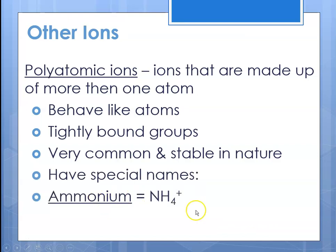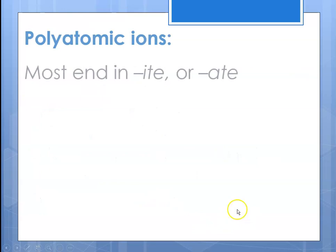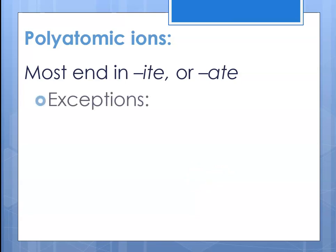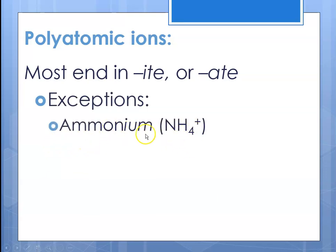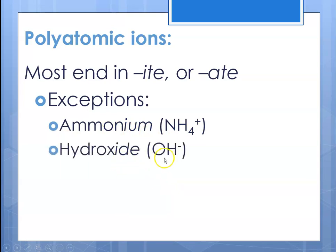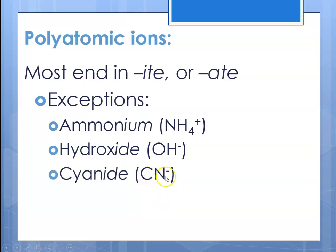They all have special names. Most polyatomic ion names end in -ite or -ate and typically contain oxygen. The exceptions are ammonium — NH₄⁺ — which ends in -ium; hydroxide — OH⁻ — whose name doesn't end in -ite or -ate; and cyanide, which is carbon bonded to nitrogen with a negative charge.